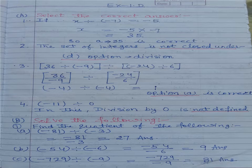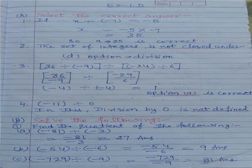Second: the set of integers is not closed under division — so option D is correct. Third: 36 divided by minus 9, divided by minus 24 divided by 6. Solving: 36 upon minus 9 equals minus 4, and minus 24 divided by 6 equals minus 4. Minus 4 divided by minus 4 equals 1, so option A is correct. Fourth question: minus 11 divided by 0 — division by 0 is not defined, so our answer is D, not defined.